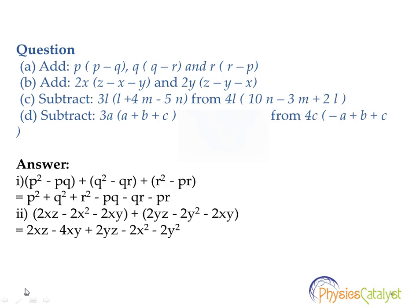The second problem: We have to add 2x(z-x-y) and 2y(z-y-x). First, we do the multiplications. 2x(z-x-y) = 2xz-2x²-2xy.